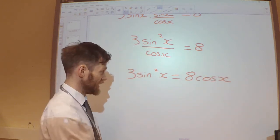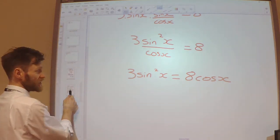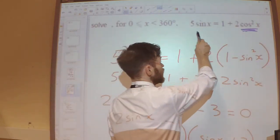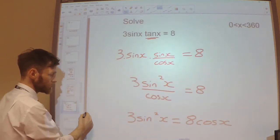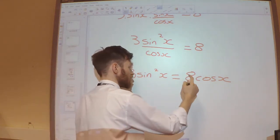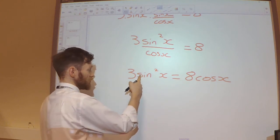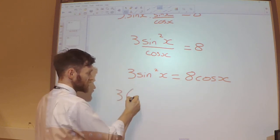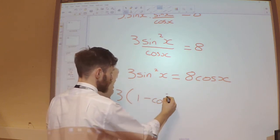And now, actually, once I've got to this stage here, this is pretty much the same sort of equation as this one because I've got a sine squared and I've got a cos and I need to use the squared identity. So I'm going to replace the sine squared here. I'm going to replace that with a 1 minus cos squared.